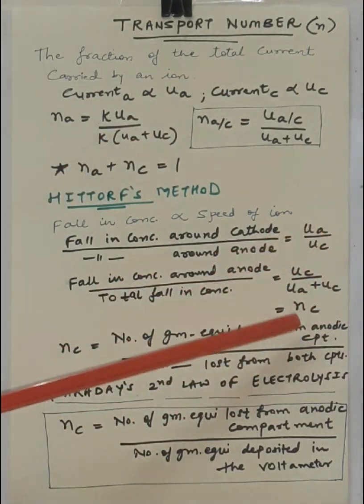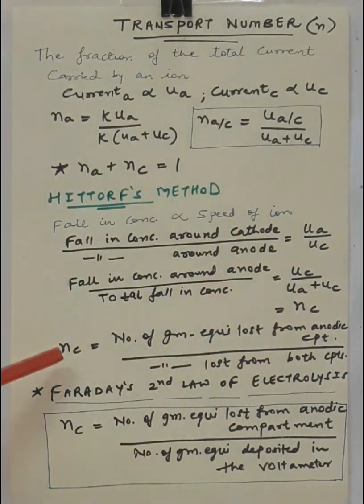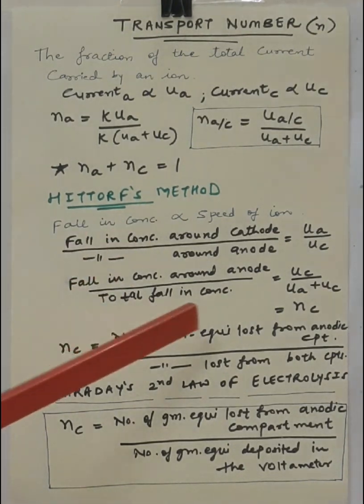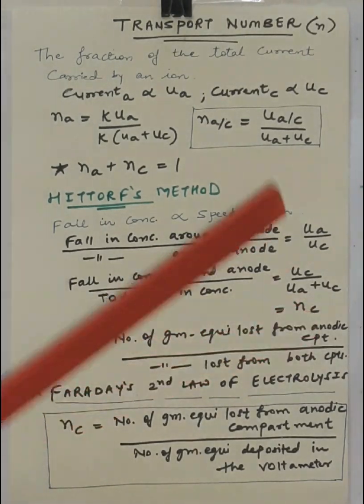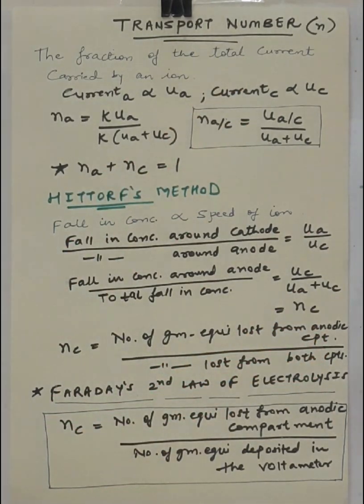What is this term? This is equivalent to transport number of cation. So, I can say transport number of cation in other sense, that is in terms of gram equivalent loss: number of gram equivalent loss from anodic compartment divided by number of gram equivalent loss from both the compartments. This is the other form of transport number of cation.